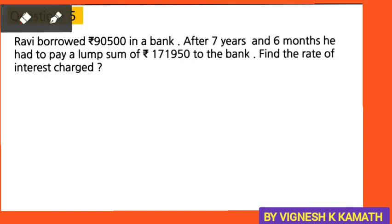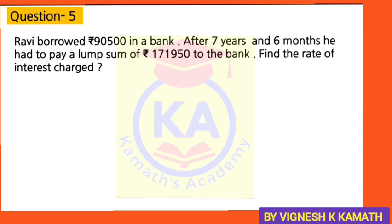Let's begin with question number 5. Ravi borrowed Rs. 90,500 from a bank. After 7 years and 6 months, he had to pay a lump sum of Rs. 1,71,950 to the bank. Find the rate of interest charged. First, write down what is given. The borrowed amount is the principal P. After 7 years and 6 months, N equals 7 years and 6 months — I will write that later.